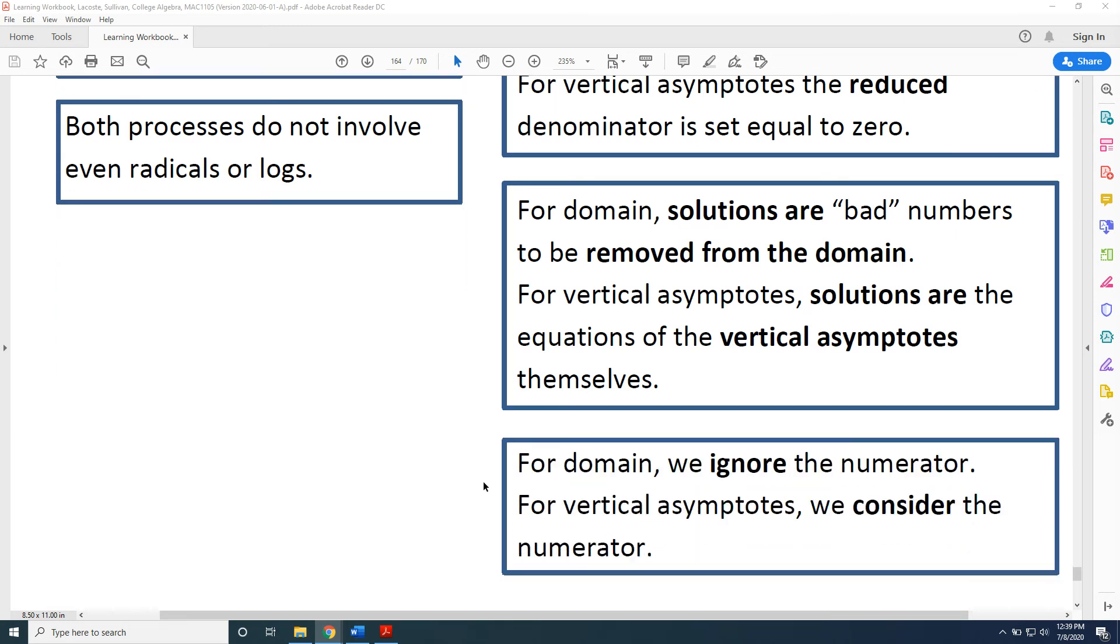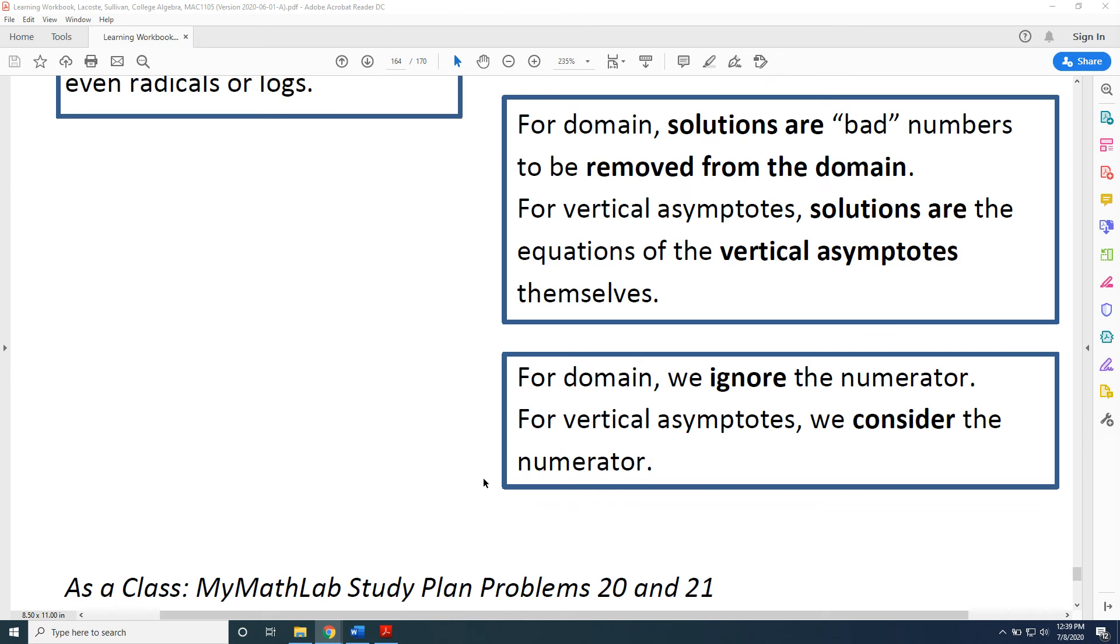Next comparison. For domain, solutions are bad numbers to be removed from the domain. For vertical asymptotes, solutions are the equations of the vertical asymptotes themselves.